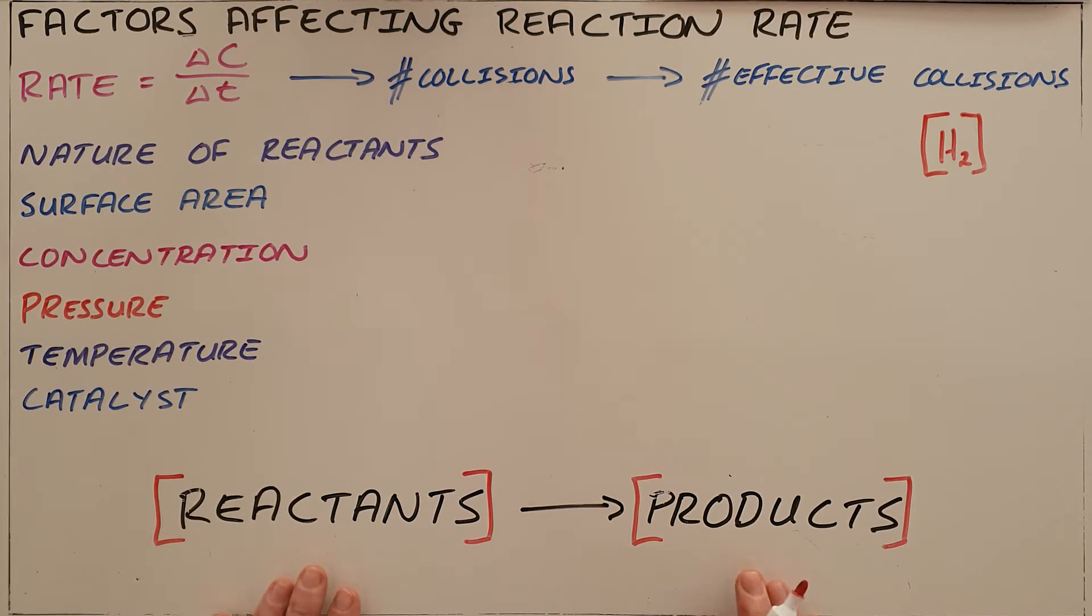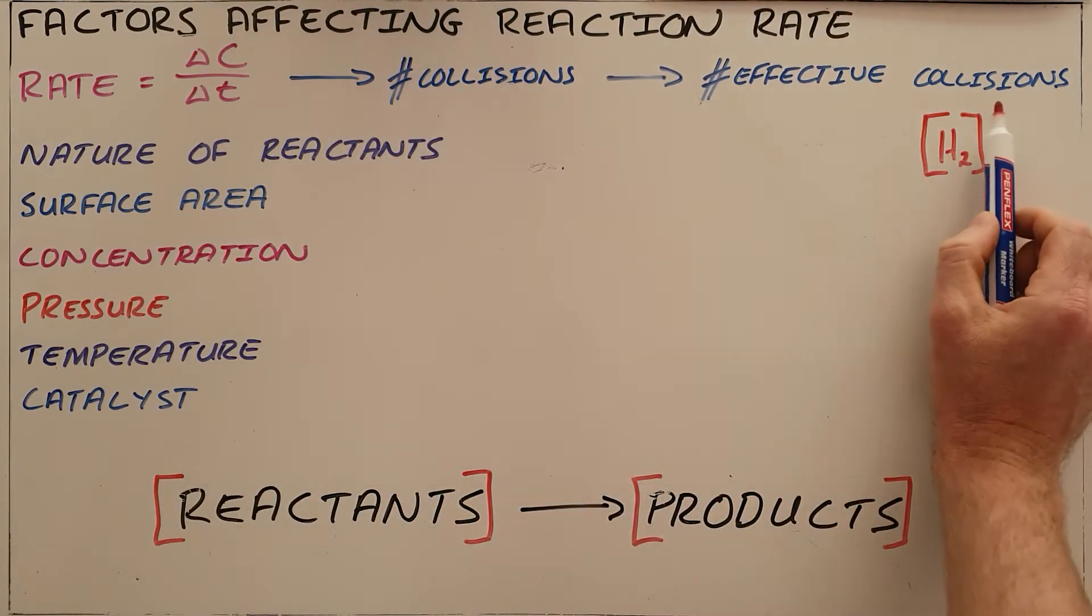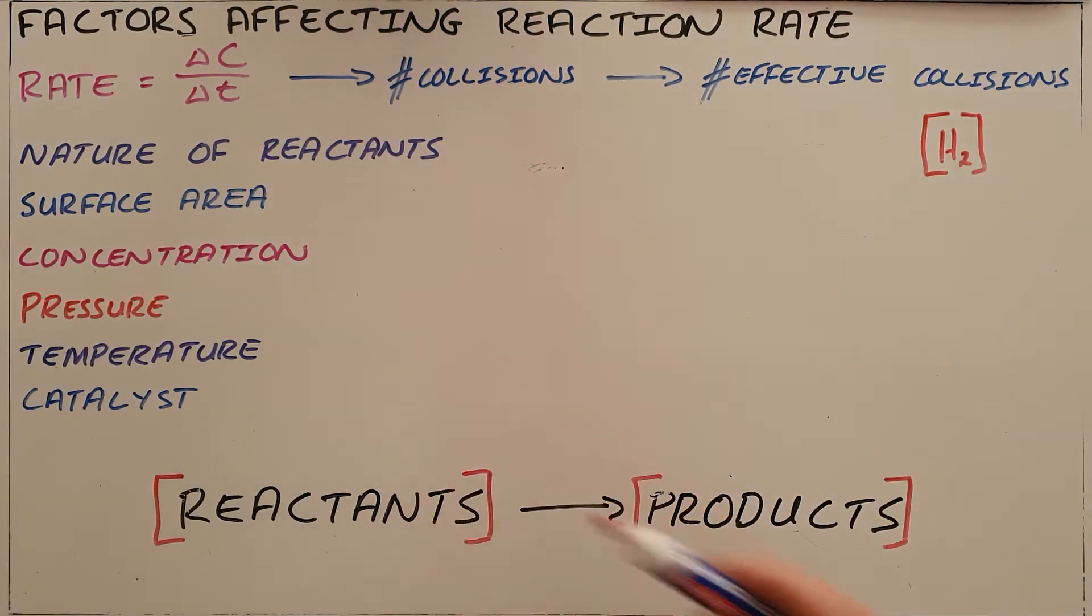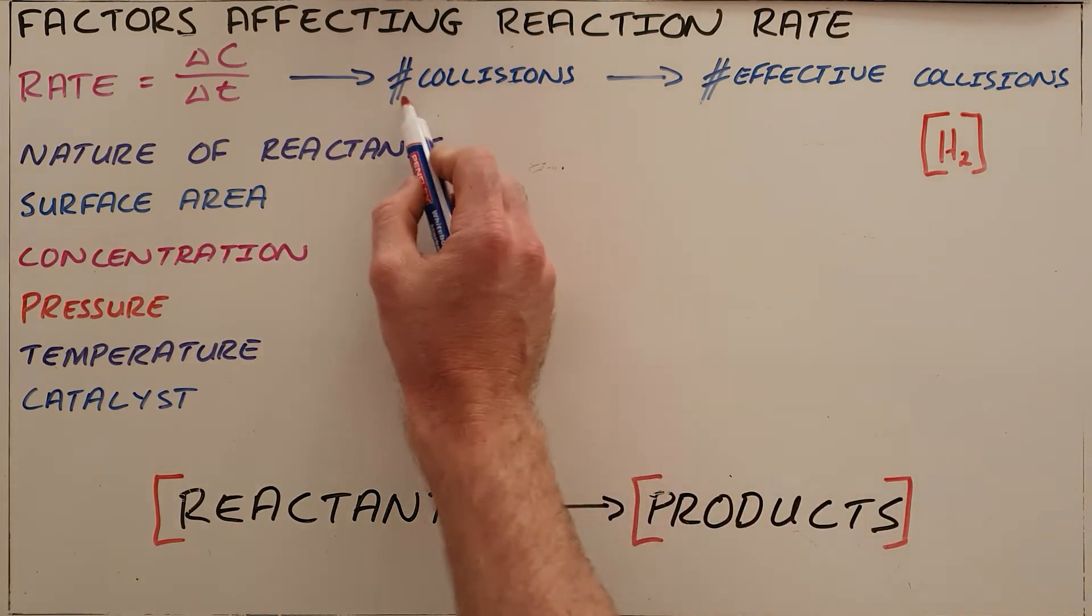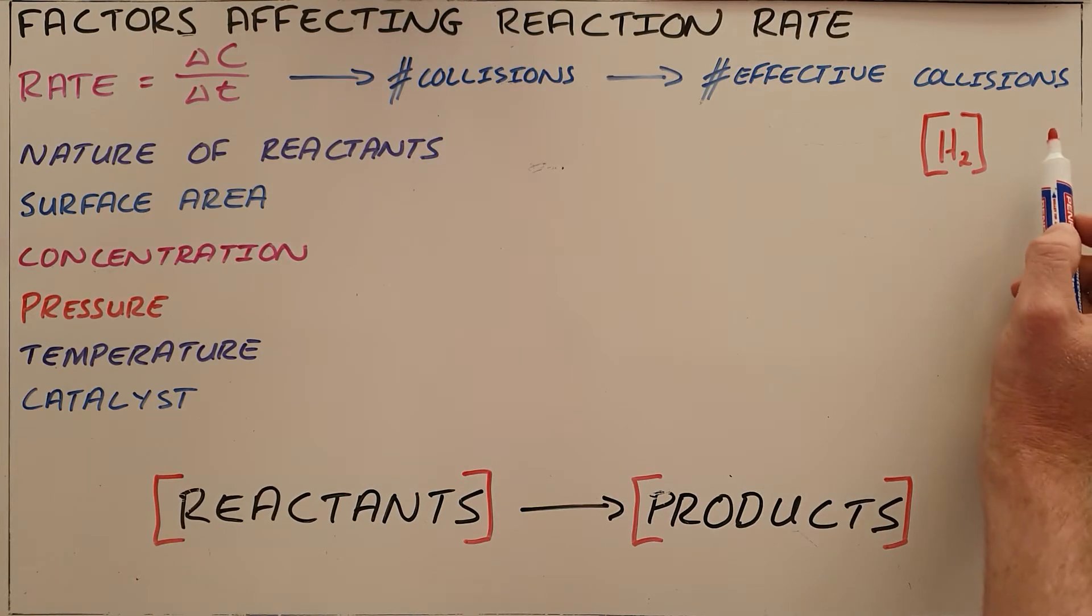We know from collision theory that in order for a reaction to take place, the particles must collide with each other. All particles are constantly colliding and only a small fraction of those are actually effective collisions. Most of the changes that we can make to a chemical reaction change the number of total collisions, which as a result increases the number of effective collisions.